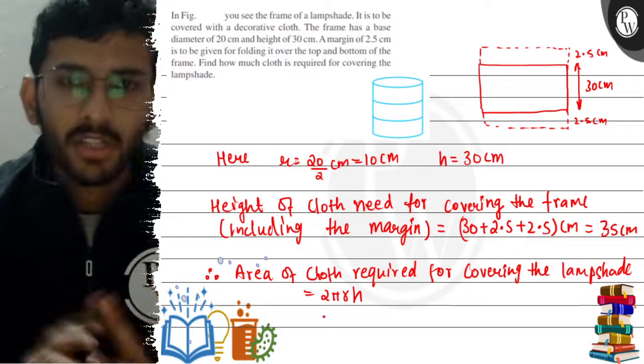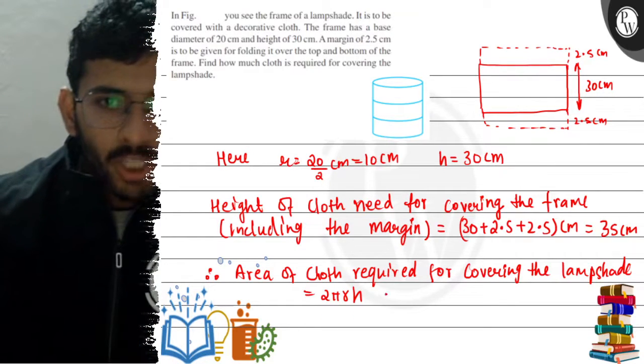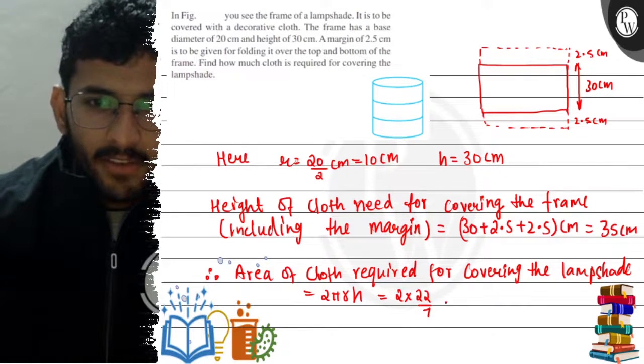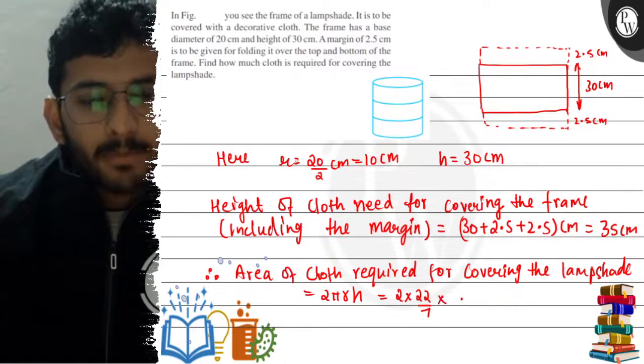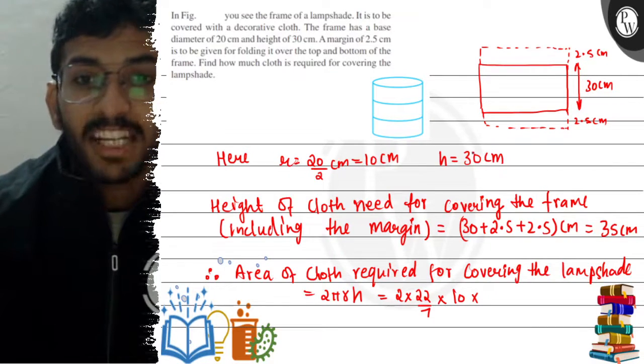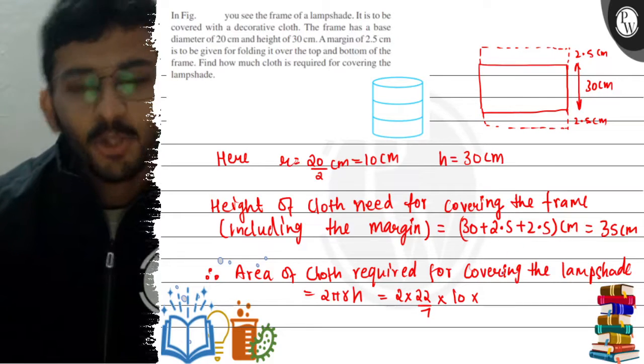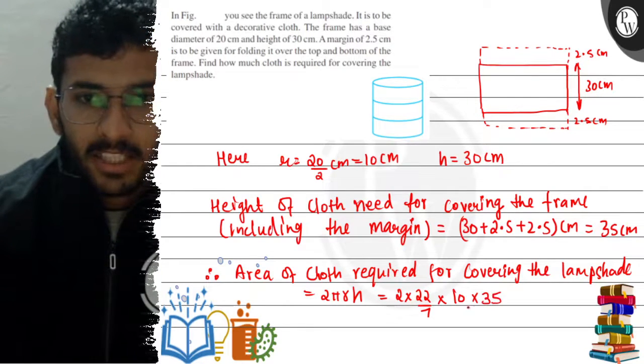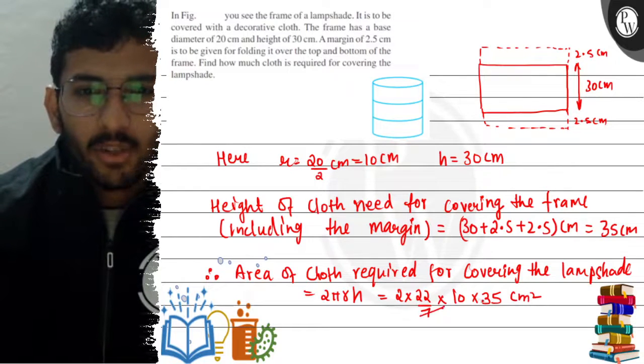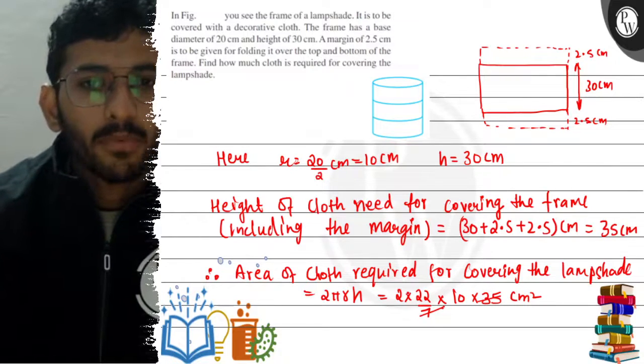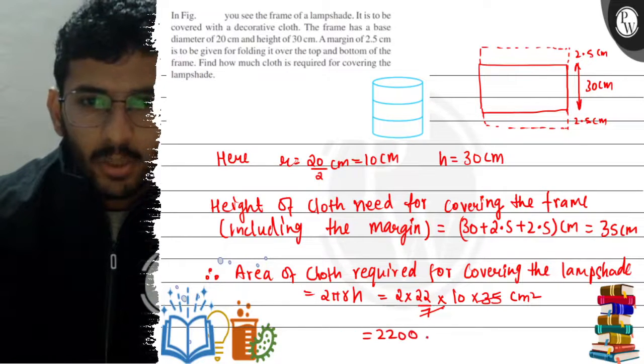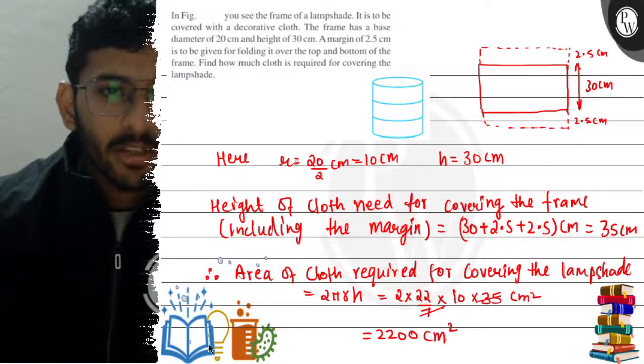If we substitute the values, we have 2 times 22 by 7, multiplied by radius 10, and the new height will be 35 centimeters. If I simplify this, 7 cancels, here it is 44, here it is 50, which gives 2200. This is 2200 square centimeters.